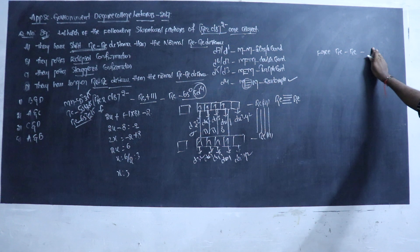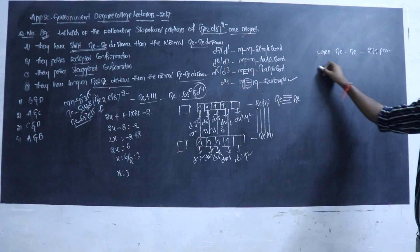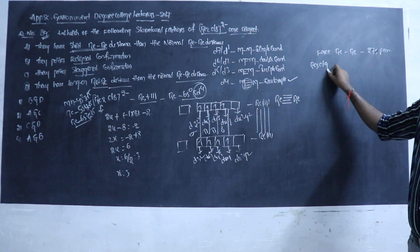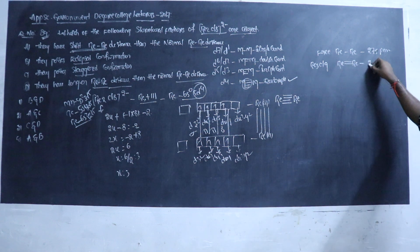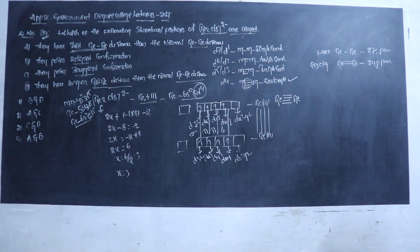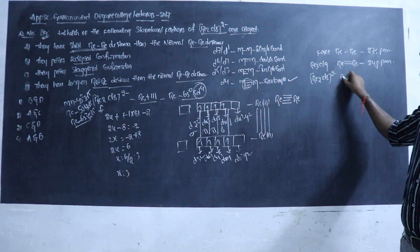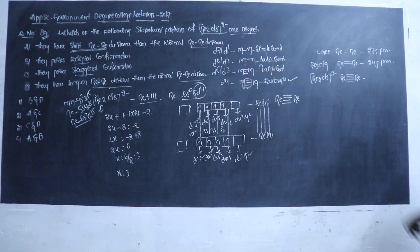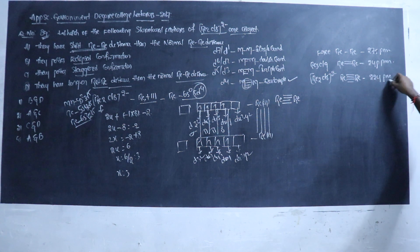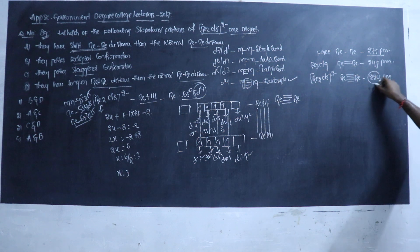You can find a free rhenium metal bond of 275 picometers. In the RE₃Cl line, we have a double bond of approximately 248 picometers. In RE₂Cl₈²⁻ we have approximately 224 picometers. The free rhenium bond is 275 picometers, and RE₂Cl₈²⁻ is 225 picometers.